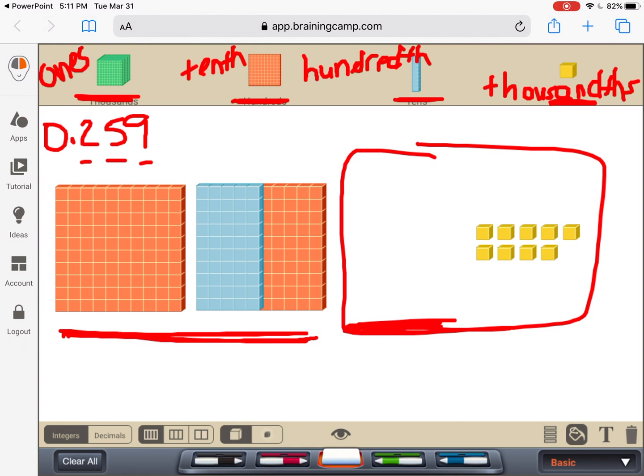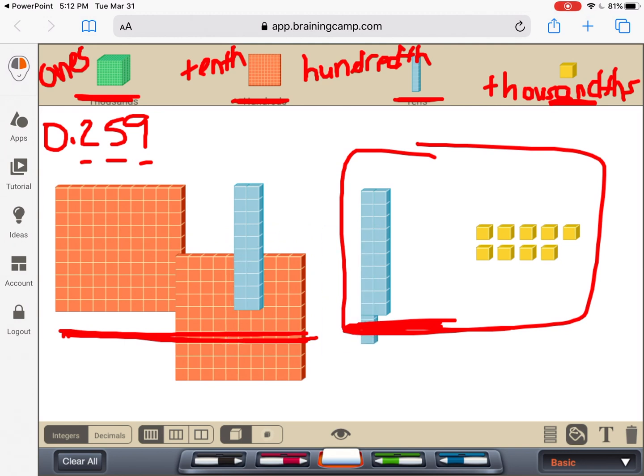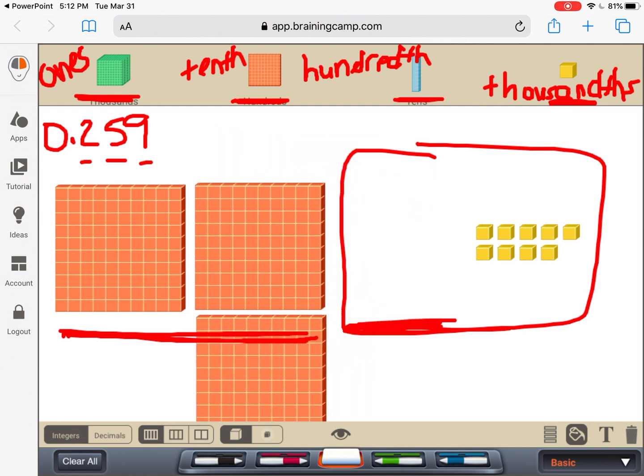And so what we say is, is it worth just removing those or is it worth giving another flat for it? Well, when it's exactly half, we have made the decision in the mathematics community that when it's exactly half, we're going to, when we round, we're going to go ahead and round up. Meaning we're going to go ahead, take those. We're going to go ahead. And we're going to take those and we're going to get rid of those. And we're just going to go ahead and give another flat for it.